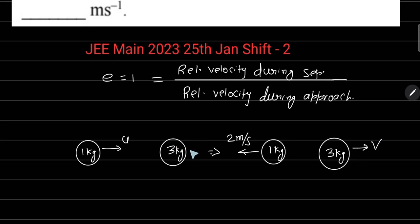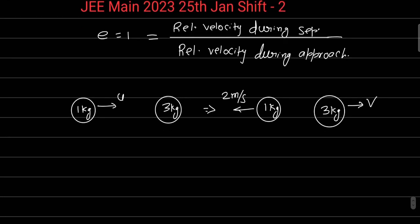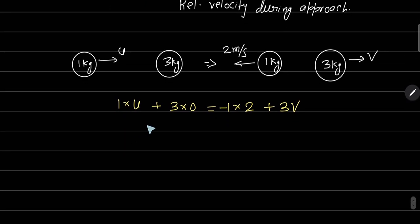Head-on collision है तो obviously 3 kg body right side में जाएगा। और अगर right side में नहीं जाएगा तो direction negative आ जाएगा। तो यहाँ पर momentum conservation: 1 kg × u + 3 kg × 0 = 1 kg × (−2) + 3 × v। तो u = −2 + 3v — यह equation number 1 आ गया।